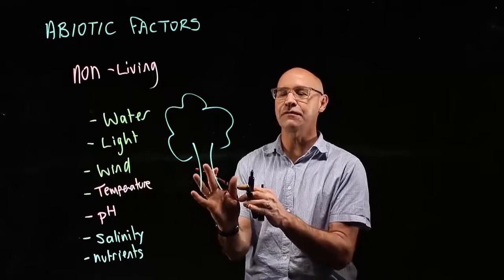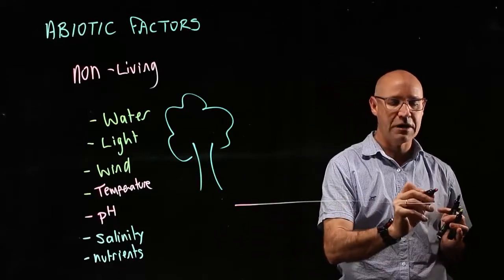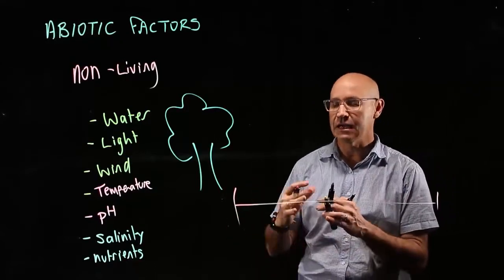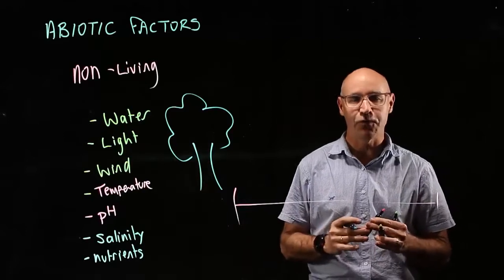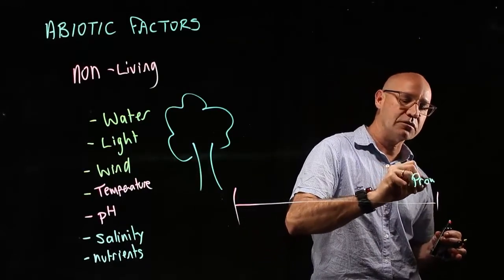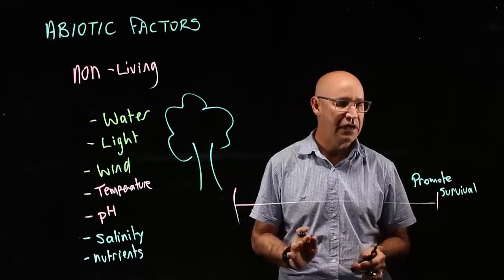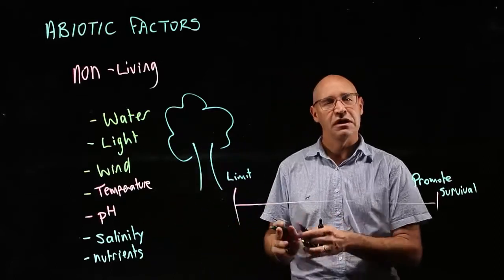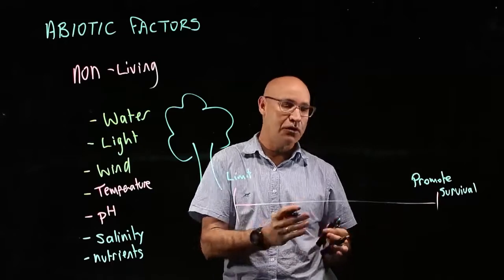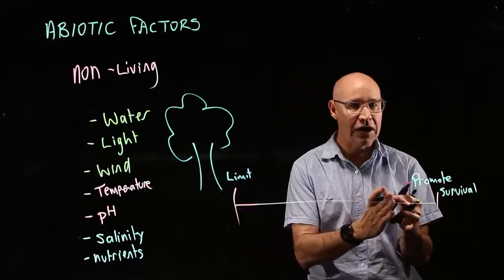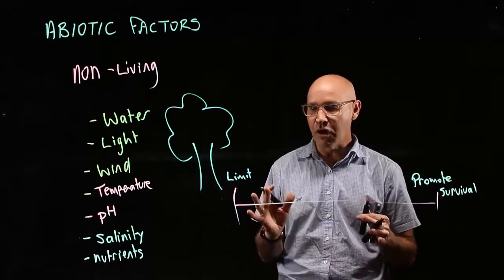Another thing to consider—I mentioned these terms before—being able to tolerate an abiotic factor and exploit it. Some abiotic factors are required for survival and promote survival. For example, a plant needs light to grow and survive. Others, at the other end of the spectrum, actually limit or make it harder for an organism to survive. High light promotes survival for plants, while low light makes it more difficult to survive.